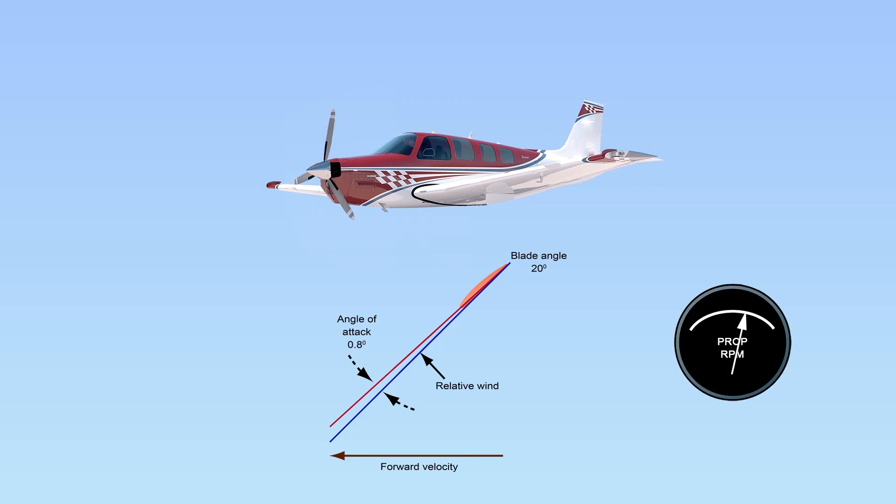However, if propeller speed increases, the trailing edge of the propeller blade travels a greater distance for the same amount of forward movement. As propeller speed increases, the relative wind strikes the propeller blade at a greater angle and the angle of attack increases.